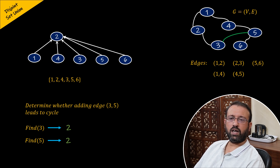This is how we can use union-find operation to determine whether adding an edge will lead to a cycle in a graph.